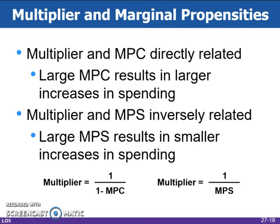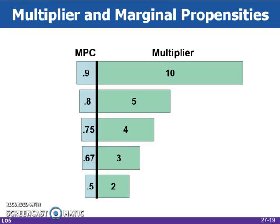The significance of the multiplier is that a small change in investment plans or consumption-saving plans can trigger a much larger change in the equilibrium level of GDP. The magnitude of the change in GDP is dependent on the size of the marginal propensity to consume and save. This figure illustrates the relationship between the MPC and the multiplier: the larger the MPC, the smaller the MPS, the greater the size of the multiplier.